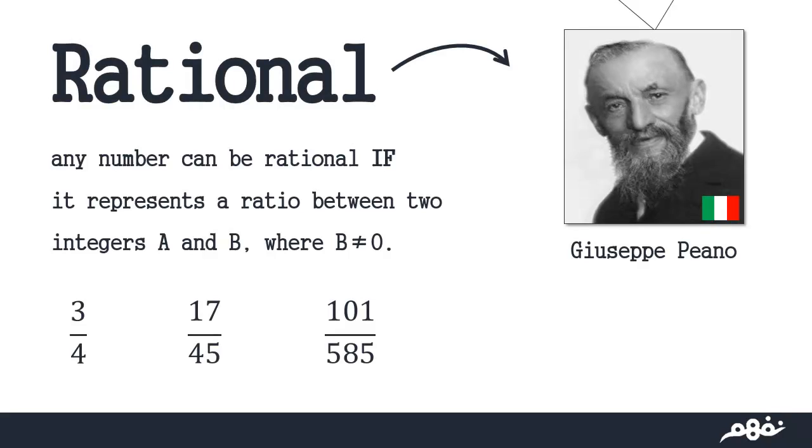Any number can be rational if it represents a ratio between two integers A and B, where B is the denominator which doesn't equal 0. Like for example, 3 over 4, 17 over 45, 101 over 585. This term was first released by the Italian mathematician Giuseppe Peano.